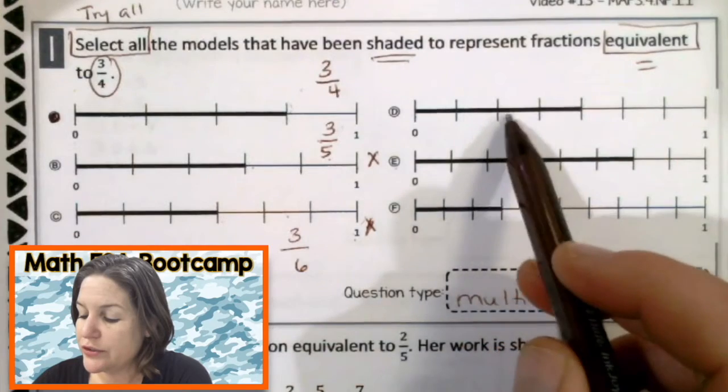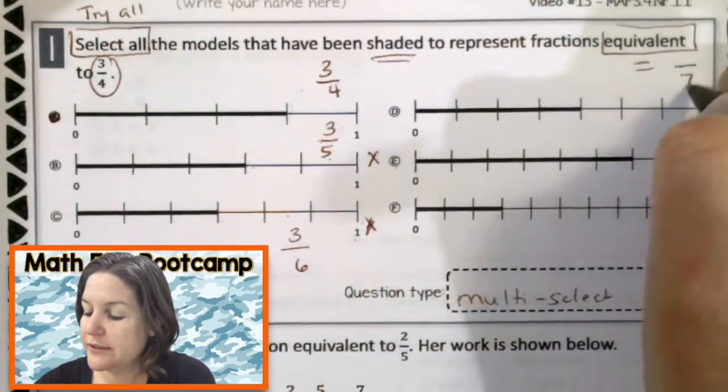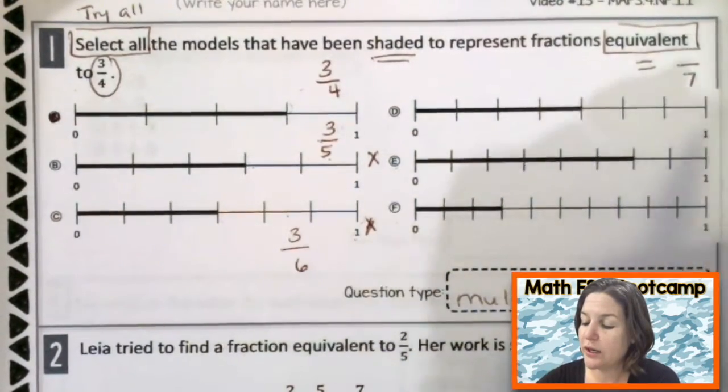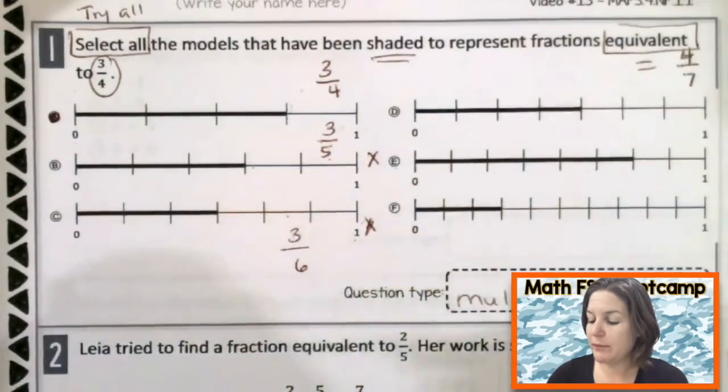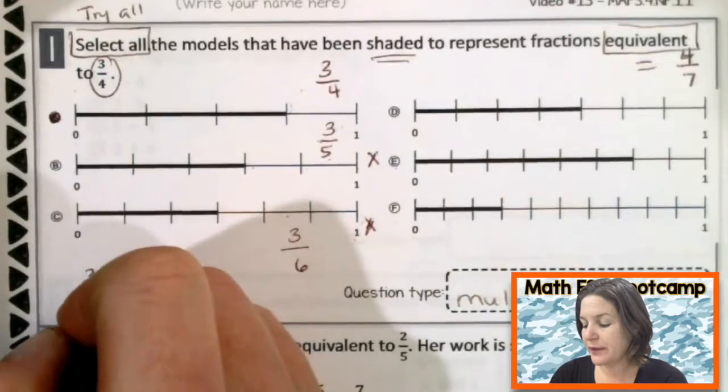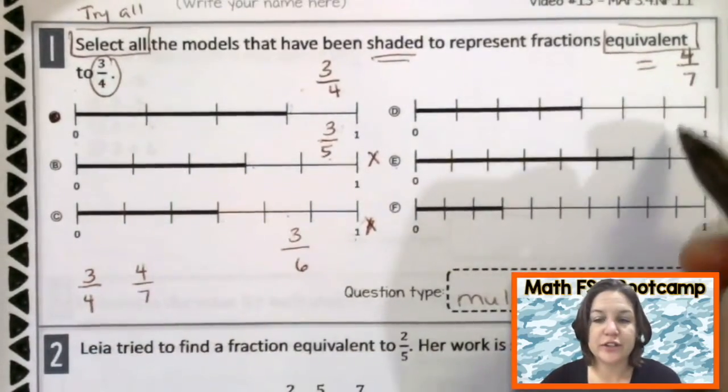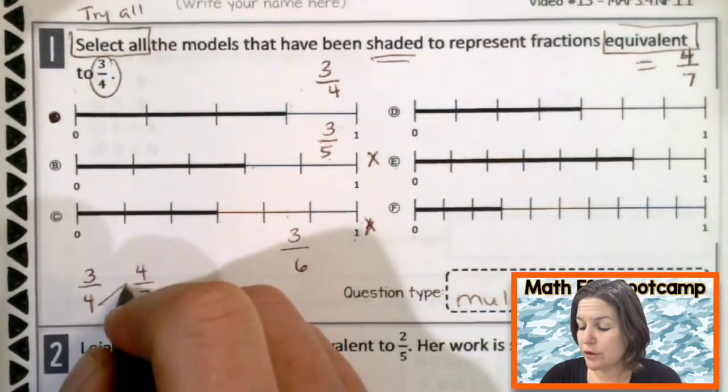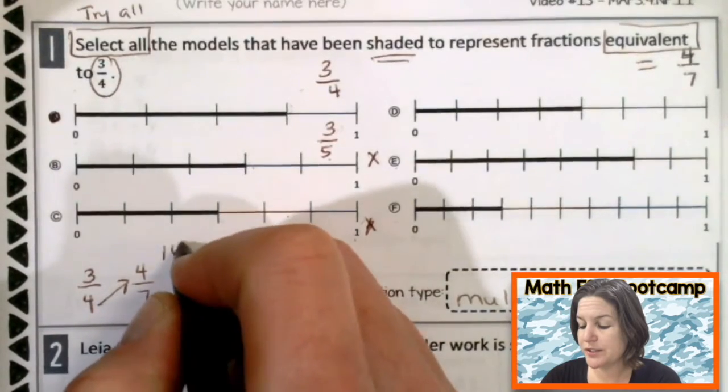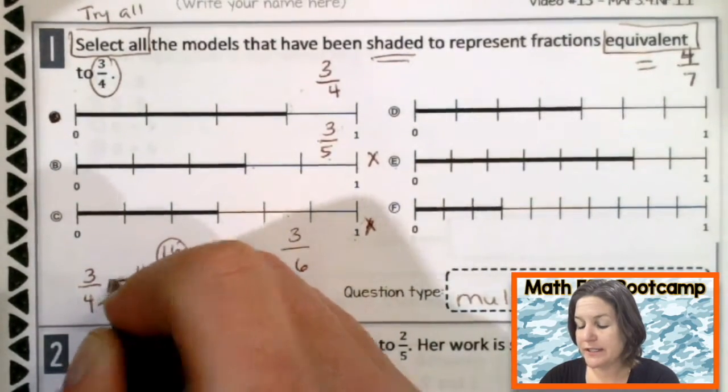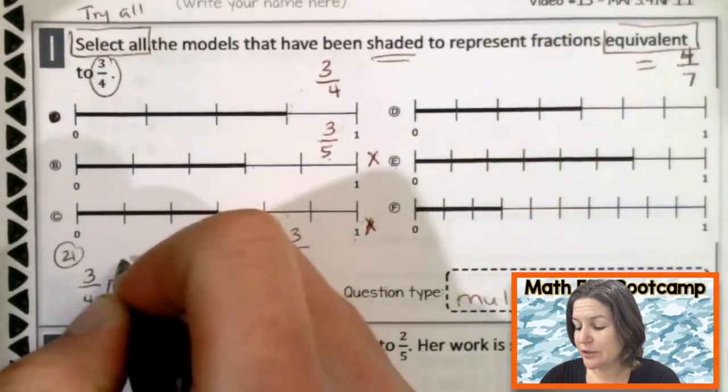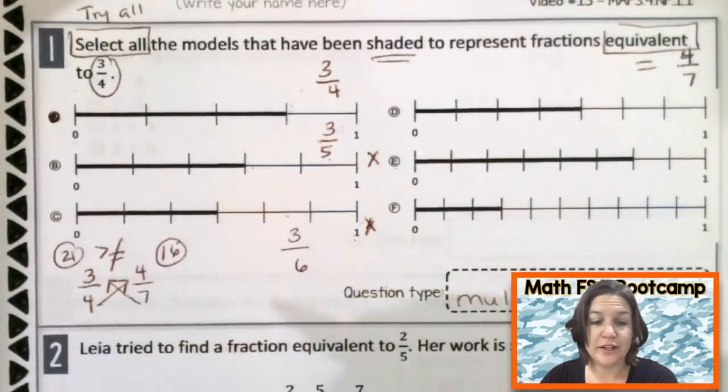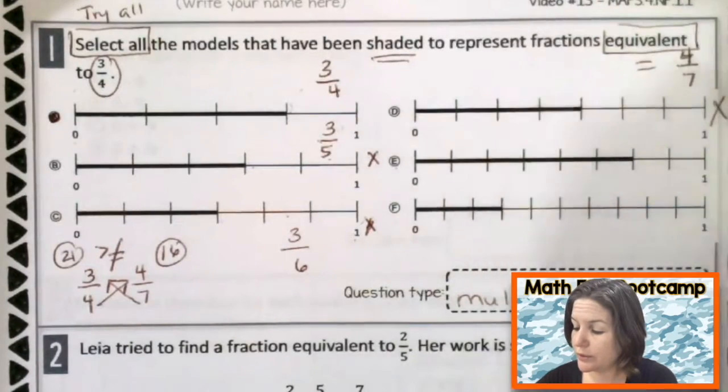Next we have one, two, three, four, five, six, seven total parts. That's our denominator. And we have one, two, three, four, four-sevenths. Okay. And what I'm going to do is take three-fourths and four-sevenths. And because they're not right underneath each other, I'm going to go ahead and cross-multiply to see if they are equivalent. So four times four is 16. Seven times three is 21. So they are not equivalent fractions. And actually three-fourths is greater than four-sevenths. So nope. We're going to eliminate that one.